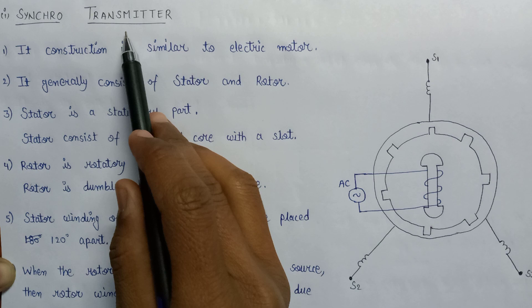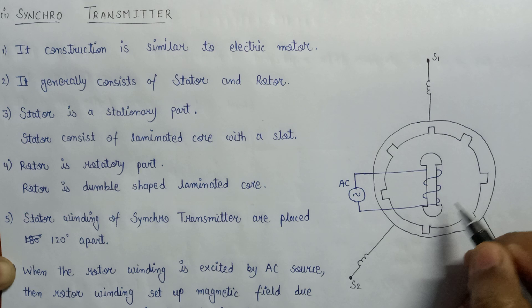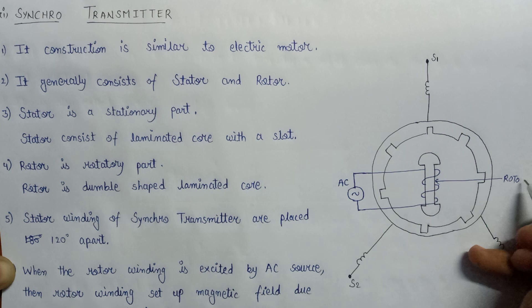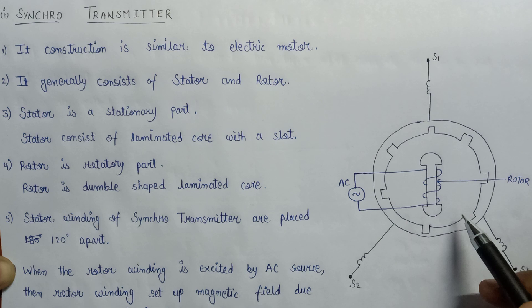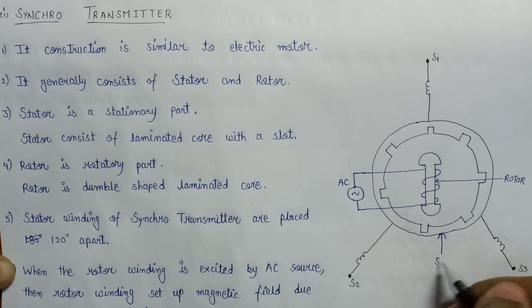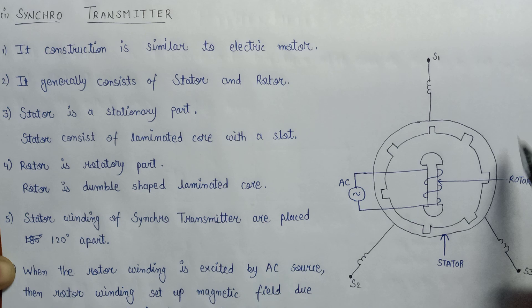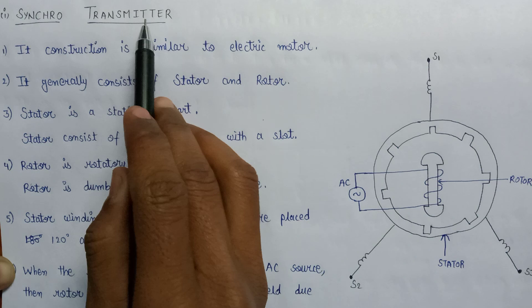Let us have a look at the synchro transmitter. Here is a basic circuit diagram of a synchro transmitter. In this diagram, this part is known as the rotor, which rotates by the help of EMF induced by an AC source. This is the stator, and the stator winding is present inside the stator. Its construction is similar to the electric motor.